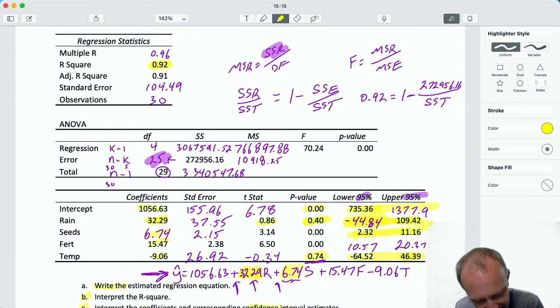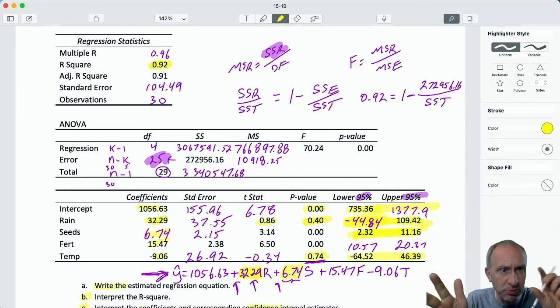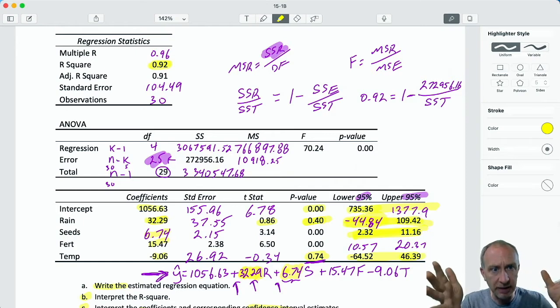So for each additional seed per square inch, it's a pretty small unit of measure, each additional seed per square inch increases average wheat yield by 6.74 pounds. That's a huge effect from one more seed per square inch, but it is what it is. So each additional seed per square inch increases average wheat yield by 6.74 pounds. If we look at the interval, I'm 95% confident that each additional seed per inch will increase average wheat yield by between 2.3 and 11.2 pounds.